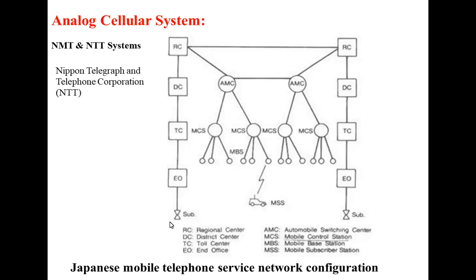Another analog system was implemented in the United Kingdom in June 1982. The UK system uses TACS — Total Access Communication System. It operated with 1000 channels with a channel bandwidth of 25 kHz, of which 600 channels were used and 400 were reserved. There was also another version called CellNet, which used 300 spectrum channels.